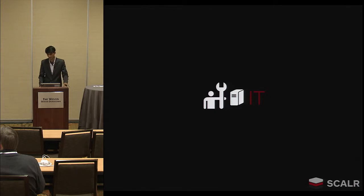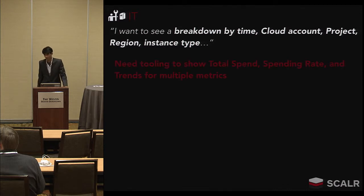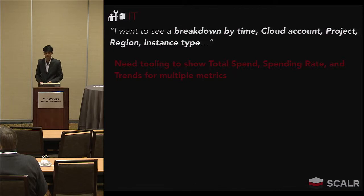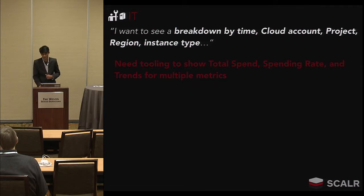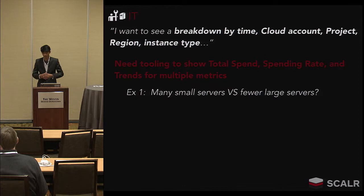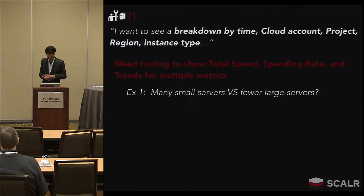Moving on to the IT side: what does IT want to see? They want a breakdown by time, cloud account, project, region, instance type — a whole series of metrics. They need tooling to show total spend, spend rate, and trends for these different metrics. Why is this slicing and dicing of cloud costs important? Really, it's to identify inefficient spending patterns. IT can look at whether they're spending more on one type of server or one region, and whether it makes sense to rebalance. For example: does it make sense to use many medium-sized servers in production, or reduce server count and use larger servers overall? A breakdown by instance type, instance count, and cloud account gives insight into that.